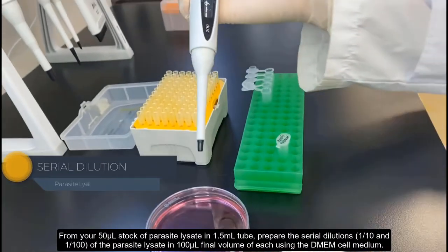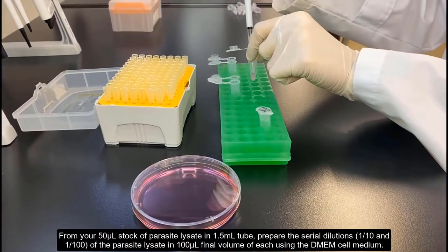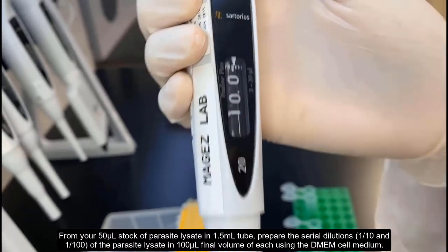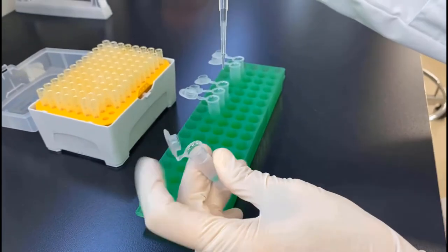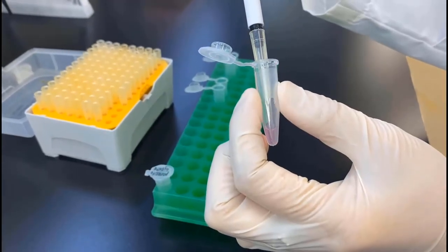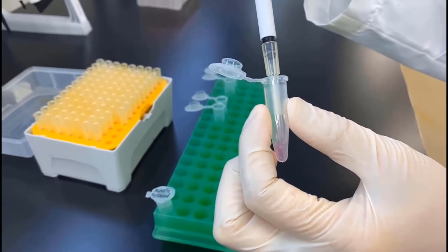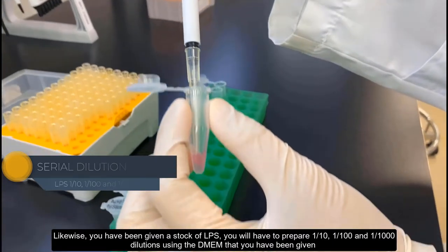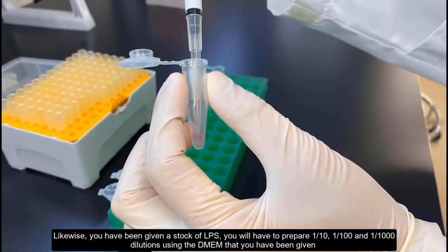From your 50 microliter stock of parasite lysate in 1.5 ml tube, prepare the serial dilutions 1 over 10 and 1 over 100 of the parasite lysate in 100 microliter final volume using the DMEM cell medium. Likewise, you have been given a stock of LPS. You will have to prepare 1 over 10, 1 over 100 and 1 over 1000 dilutions using the DMEM that you have been given.